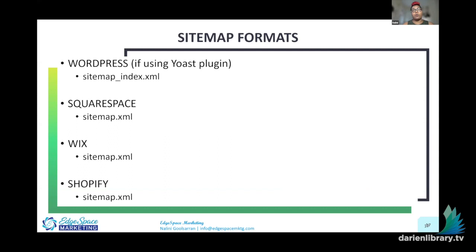How do you know what your sitemap URL is? For WordPress, it's sitemap_index.xml — and I strongly recommend using the Yoast plugin, which is free and allows you to fill in your title and meta tags. For Squarespace, Wix, or Shopify, it's simply sitemap.xml. If you typo your sitemap, don't worry — Google will give you an error saying 'could not fetch sitemap,' so you'll know immediately if you got it right or wrong.